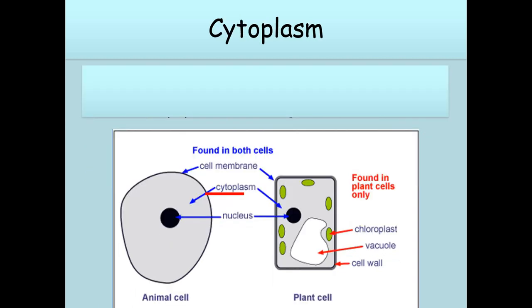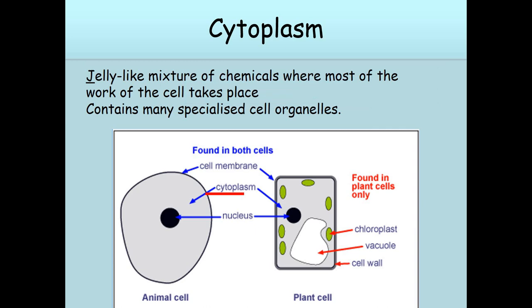Cytoplasm. It is the jelly-like mixture of chemicals where most of the work of the cell takes place. It contains many specialized cell organelles.